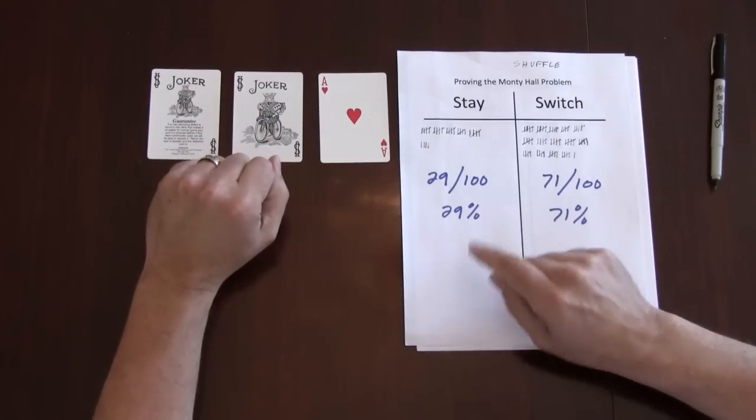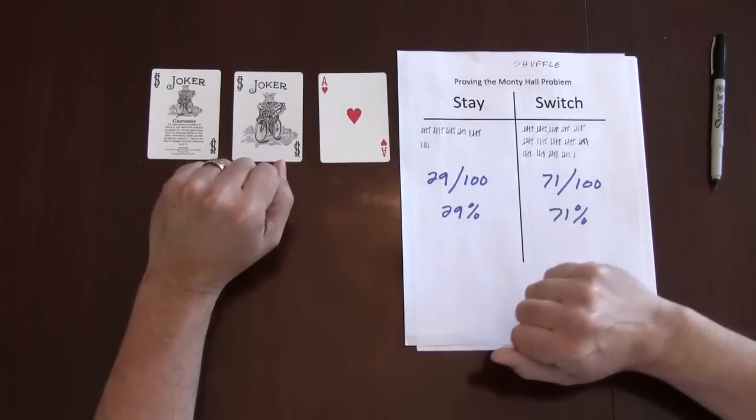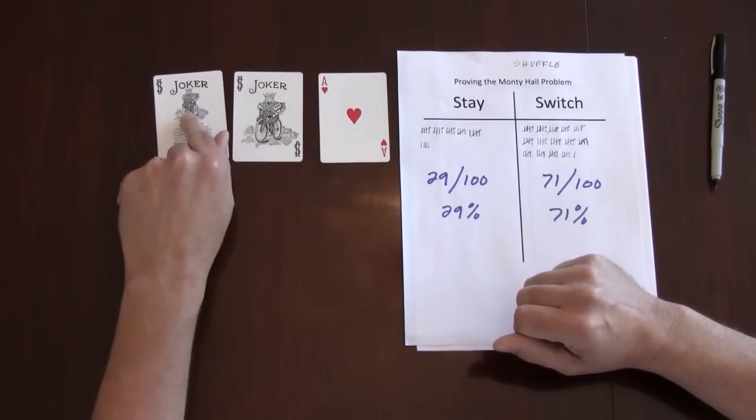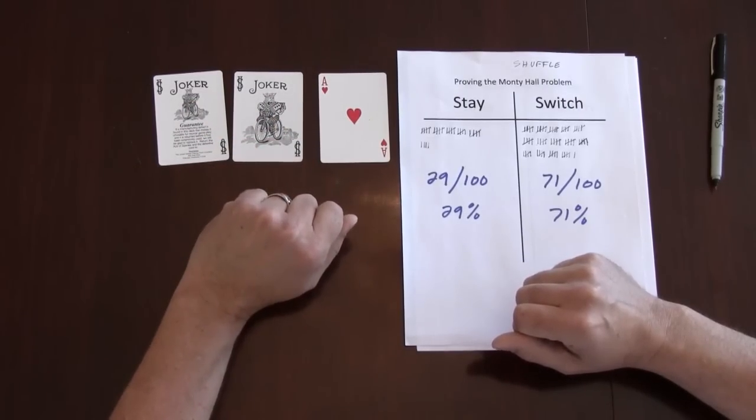And in the end, we'll get the 29 or 33, 66%. And after you've done that, you need to sit down and think about why it's a one-third and two-thirds probabilities, not 50-50.